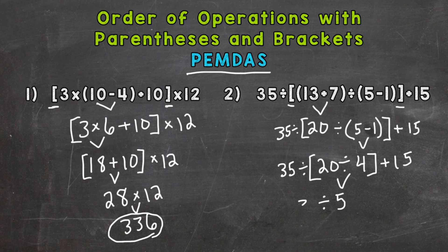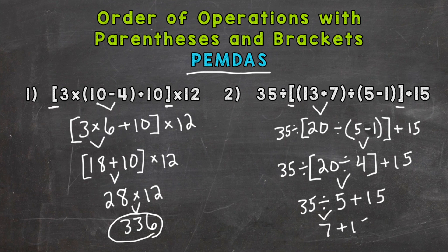Bring down everything we did not use — notice that everything stays in the same order. Now we have 35 divided by 5 plus 15. Any parentheses? No. Exponents? No. Multiplication or division? Yes, so that's our next priority. 35 divided by 5 is 7. Bring down our plus 15, and that's the last thing we need to do to wrap up this problem. 7 plus 15 is 22 — that's our solution to number 2.